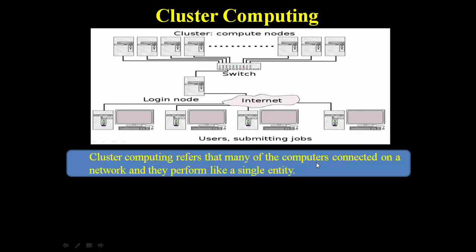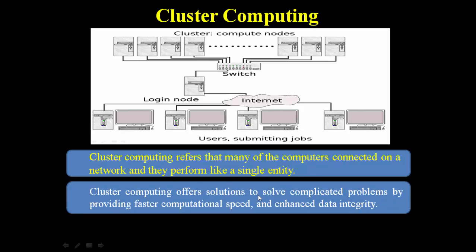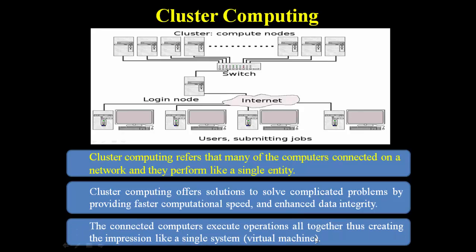In a cluster computing model, many computers are connected on a network and they perform like a single entity. So this cluster of computers acts like a single computer. The benefit of cluster computing is that it offers solutions to solve complicated problems by providing faster computational speed and enhanced data integrity. The connected computers execute operations all together, creating the impression of a single system — and it is known as a virtual machine. One important thing to note: all these servers are the same and are all on the same location. It is a cluster of servers but they are all on the same location.